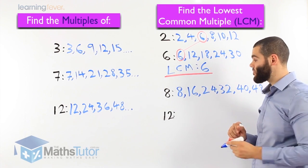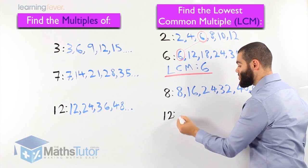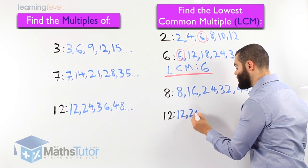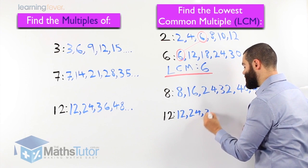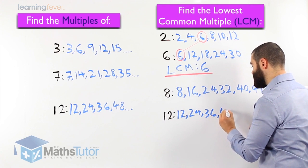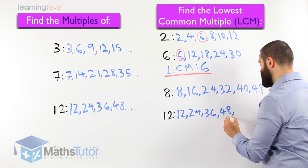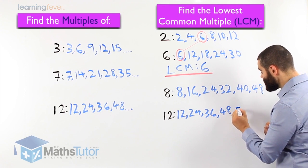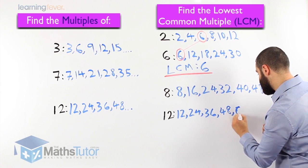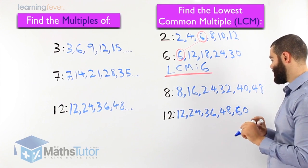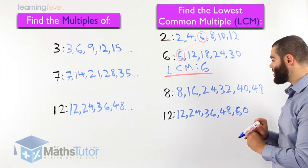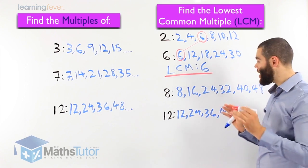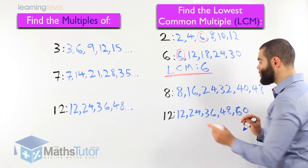Next one, let's go through the multiples of 12. 12 times 1 is 12, 12 times 2 is 24, 12 times 3 is 36, 12 times 4 is 48, and 12 times 5 is 60. So we have the multiples of 12, multiples of 8. We don't need to keep going if we've straight away identified the lowest common multiple.